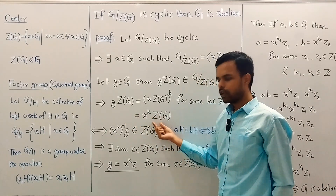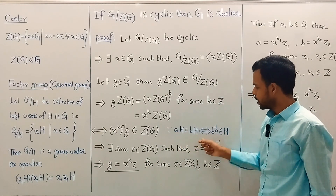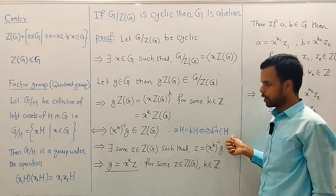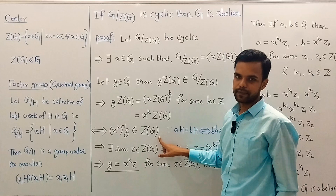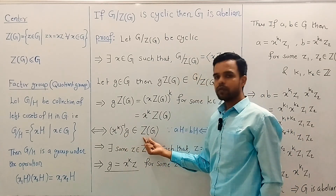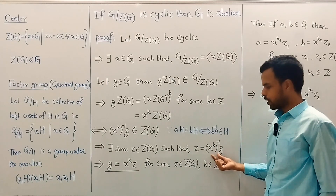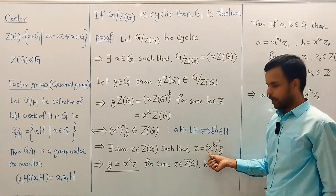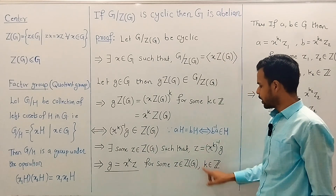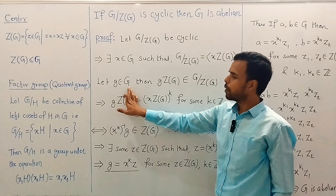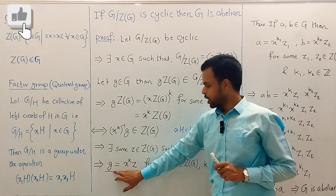Since two left cosets are equal, by the property of cosets — the left coset containing a equals the left coset containing b if and only if b inverse a belongs to the subgroup — we get that x^k inverse times g belongs to the center Z(G). Since this product is an element of Z(G), let's denote it by z. So there exists some z in Z(G) such that z equals x^{-k}·g. Multiplying both sides by x^k, we get g equals x^k times z, for some z in Z(G) and k an integer. Since g is an arbitrary element of G, this holds for all elements of G. So every element of G can be written in this form.